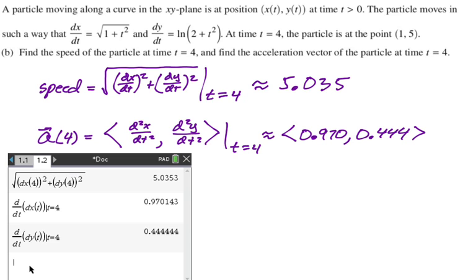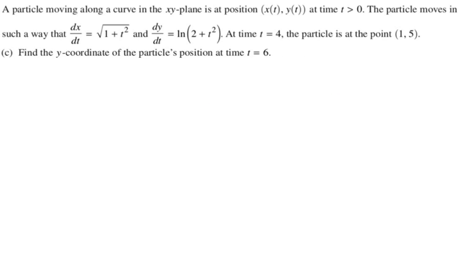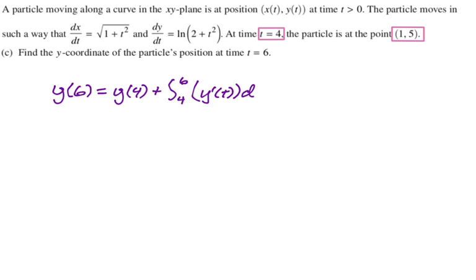Find the y-coordinate of the particle's position at time t equals 6. So now it's going to be really important that we're starting at t equals 4. So if I want to find y of 6, what I need to do is I need to know where I'm starting, right? I'm starting at y of 4, and then I'm going to add the displacement of y, which is the integral from 4 to 6, of y prime of t dt. So it's where we're starting plus the displacement. Definitely my favorite way to use the fundamental theorem.